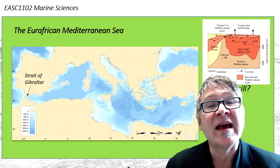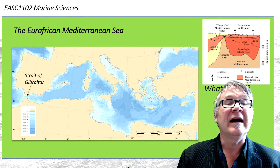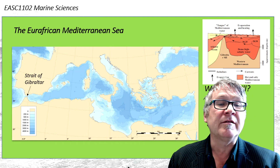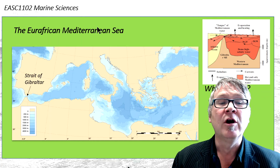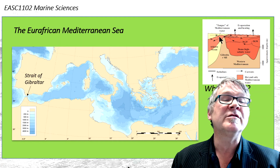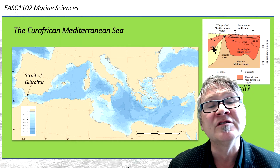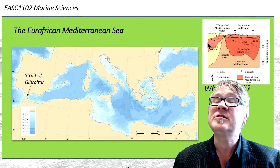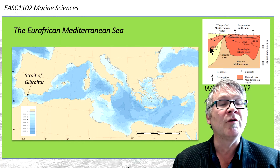What increases the salinity of the water is excess evaporation. You can see the dense, high-salinity water filling the deep basins of the Mediterranean Sea. Part of that water actually flows over the sill — at the Strait of Gibraltar — into the ambient Atlantic Ocean, and it ends up at a depth of around 1,000 meters.